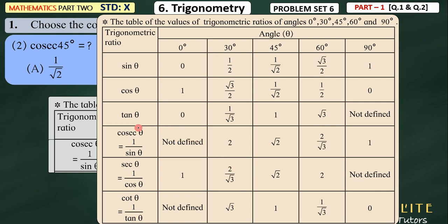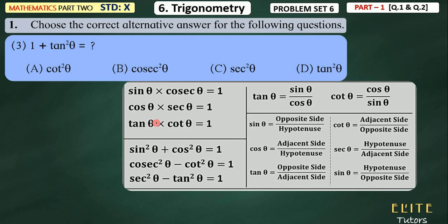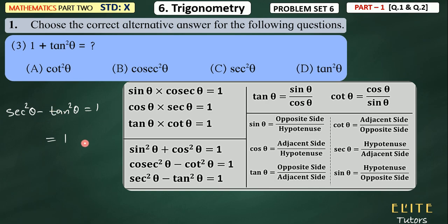Now let's see: 1 plus tan square theta is what. All these formulas I have told you, and this trick I have told you here. 1 plus tan square theta — obviously this formula comes from: sec square theta minus tan square theta is equal to 1. So here, sec square theta minus tan square theta equals 1. So what you call 1 plus tan square theta — if you send 1 to the right side, the right side will be plus tan square theta, and the left side will be sec square theta. So this means that 1 plus tan square theta equals sec square theta. And if you see the answer here, that is the answer.